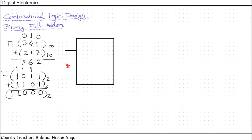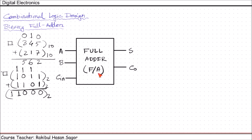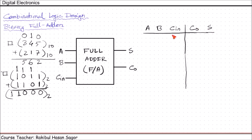Let us draw the block diagram first. There will be two inputs — for example A and B — and carry in. There will be two outputs: one will be sum and another will be carry out. We name this box 'full adder.' First, let us draw the truth table. We have inputs A, B, and carry in, which may come from the previous addition, and we have carry output and sum output.